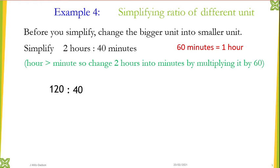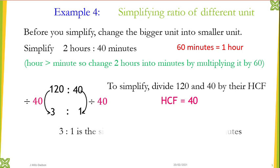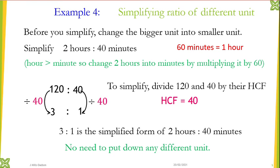Two hours becomes 120 minutes, and 40 minutes stays as 40 minutes. Once you convert them into the same unit you don't need to write the units. The highest common factor of 120 and 40 is 40. So 120 to 40 simplifies to 3 is to 1. So 3 is to 1 is the simplified form of 2 hours to 40 minutes, and as usual you don't need to put down any units.